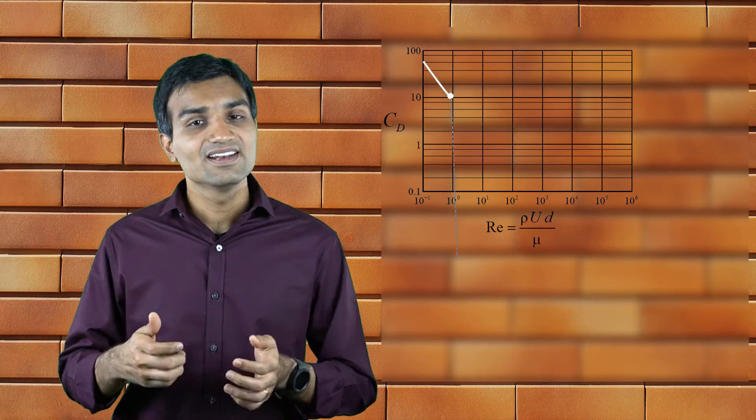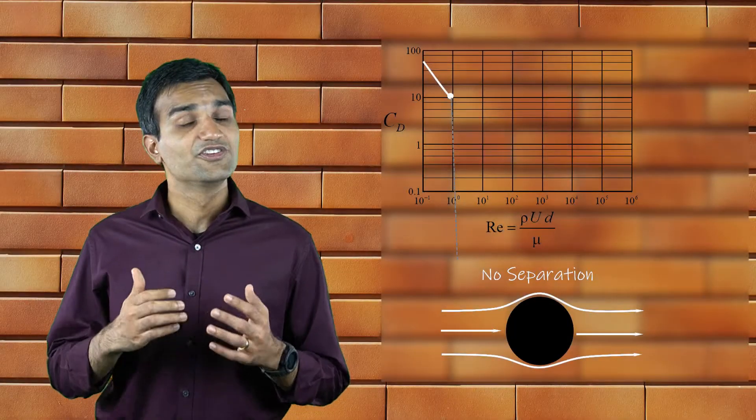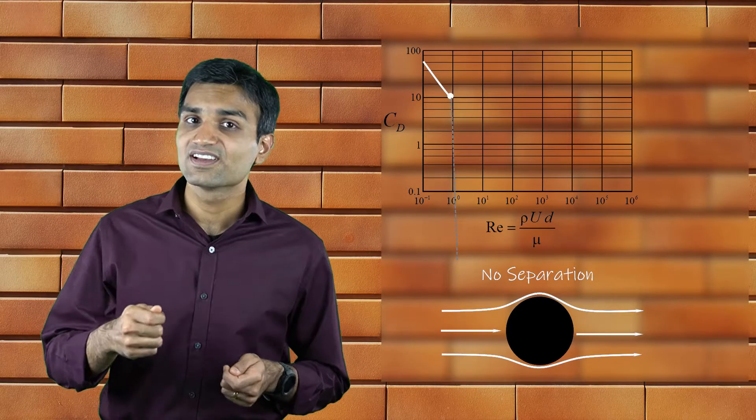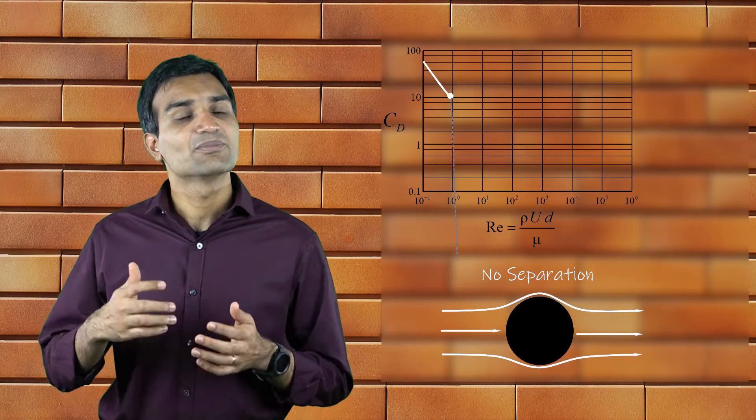Let us take the same flow around the cylinder example to illustrate the variation of drag with increasing Reynolds number. For really low Reynolds number, the flow around the cylinder remains attached to its surface. The drag value obtained in this case is purely because of viscous or shear resistance. There is very little pressure drag here.